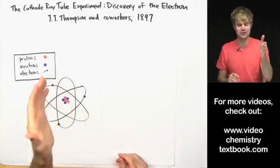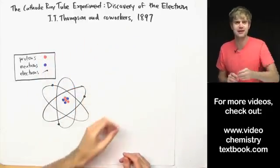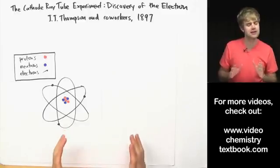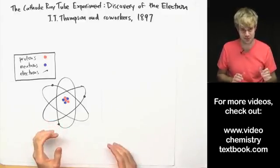In this video we're going to talk about how J.J. Thompson discovered the electron in 1897 using the cathode ray tube experiment.